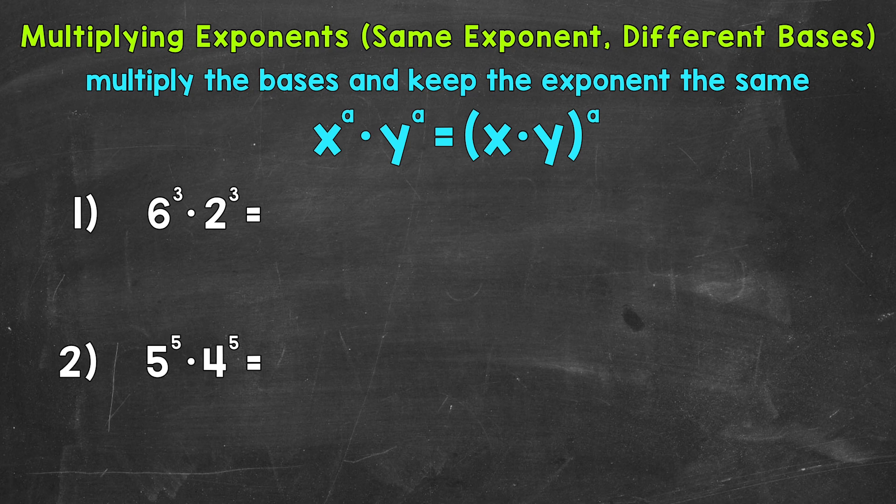Now for these, we need to multiply the bases and then keep the exponent the same. For example, if we have x to the power of a times y to the power of a, that's going to equal x times y to the power of a. Let's jump into our examples and see exactly how this works.